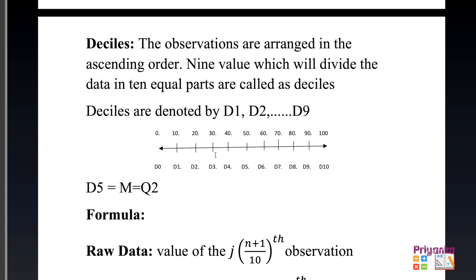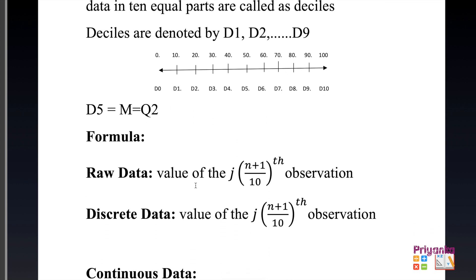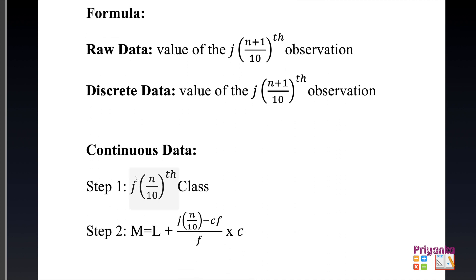These are all percentages. For the decile formula, raw data and discrete data use the same formula, but for decile, write 10 as the divisor. J represents which decile is asked — D2, D3, D4, D5, etc. For continuous data, the formula similarly uses j and 10. Comparing: median used 2, quartile used 4, and decile uses 10.